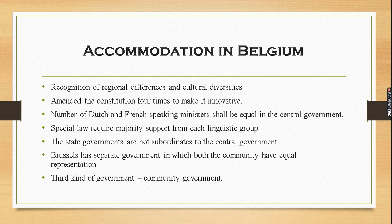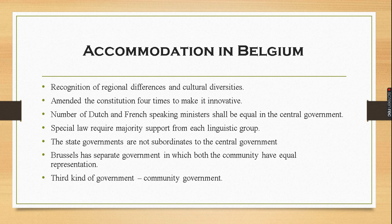The Belgian leaders took a different path compared to Sri Lanka. They recognized the existence of regional differences and cultural diversities — they addressed and noticed them rather than suppressing them. Between 1970 and 1993, they amended their constitution four times in order to bring out a solution that would enable everyone to live together within the same country. The arrangement they worked out was different from any other country and undoubtedly very innovative.